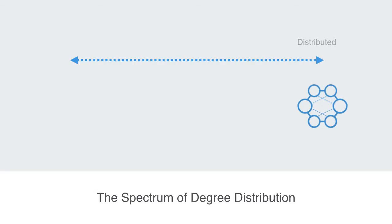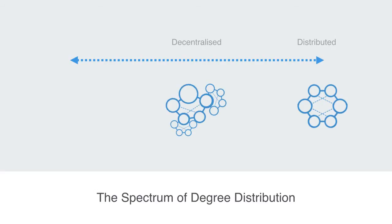As we turn our degree distribution parameter up, we will start to see hubs appearing. These types of networks are described as decentralized, implying that unlike our distributed graph where there was no real center, these have a number of central hubs to them. These decentralized networks have the small world property that we mentioned earlier, making them very effective at connecting a large number of elements within a short path length.